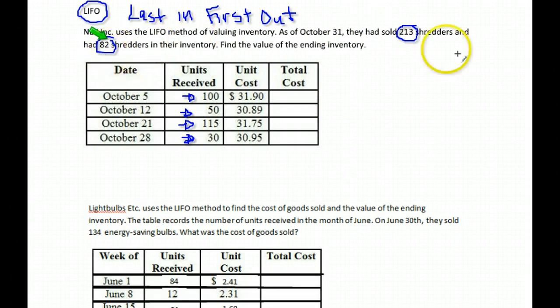So they were nice enough to break it down for us. They said, of the things that they bought, they sold 213. They have 82 left over. We want the value of the end inventory. So we want the value of these 82 that were left.